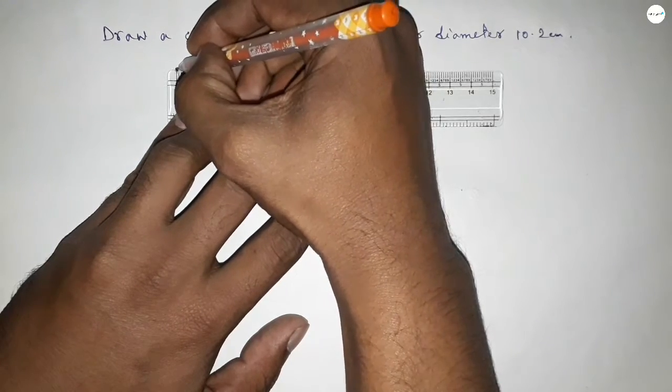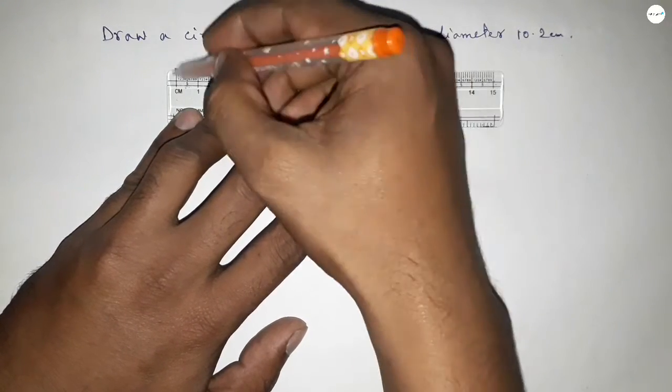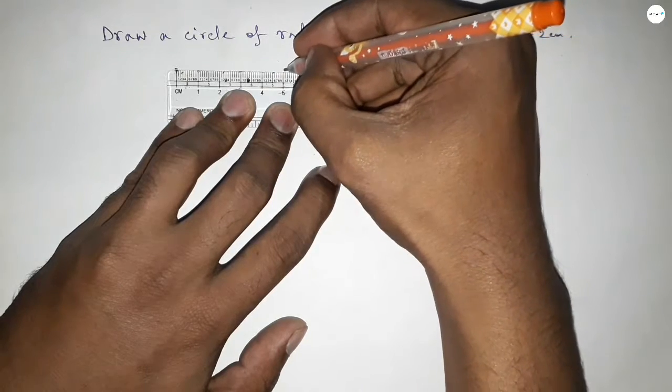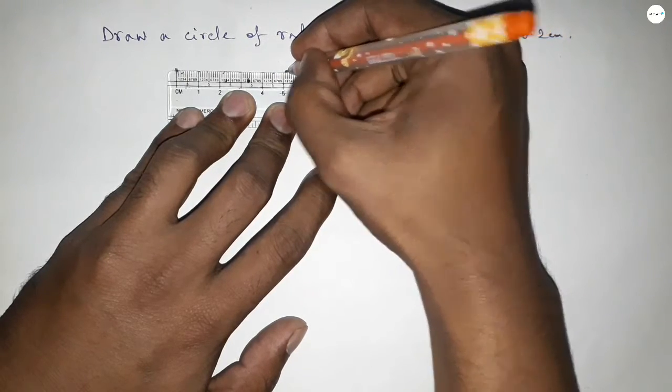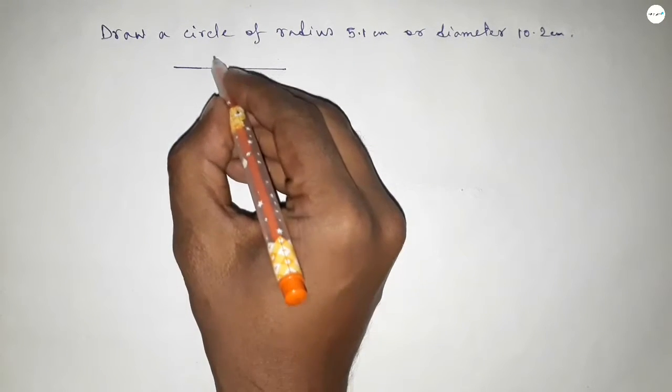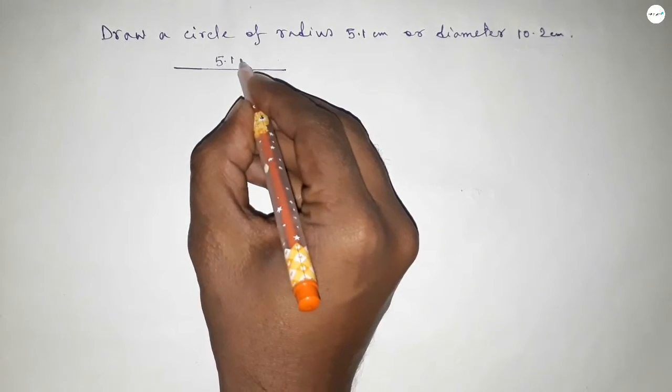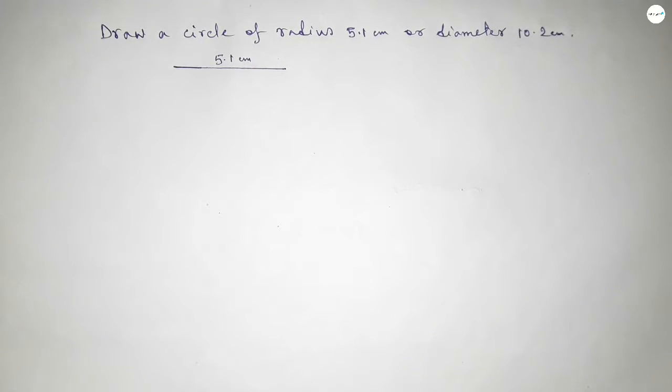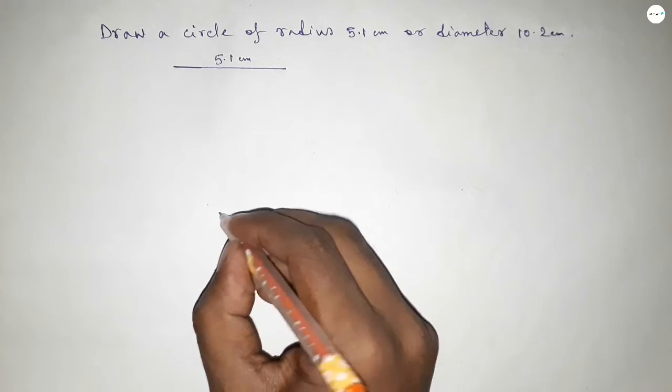So this is starting 0, 1, 2, 3, 4, 5, and this is 5.1 centimeter. So we know that radius of a circle is half of diameter. So this is 5.1 centimeter. Now taking here a point.